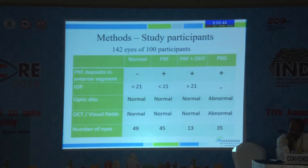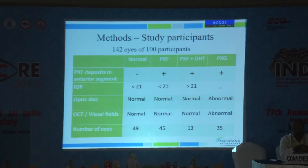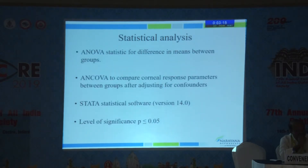Using these tests, we classified the 142 eyes included into four categories. Normals had IOP less than 21 mmHg with normal disc and fields. The pseudoexfoliation group was similar to normals but had pseudoexfoliation deposits in the anterior segment. The next group was pseudoexfoliation eyes with higher IOP but normal disc and fields, classified as PXF with ocular hypertension. The last group was frank pseudoexfoliation glaucoma, which had abnormal disc and fields.